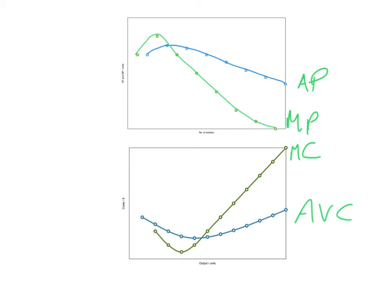However, you need to remember that on the vertical axis in the product diagram we have output, and on the horizontal axis we have number of workers. But on the cost diagram, on the vertical axis we have costs, and on the horizontal axis we have output.